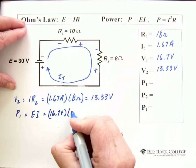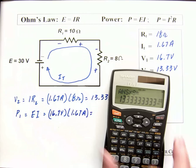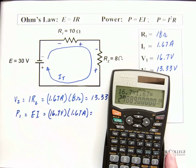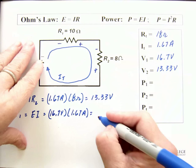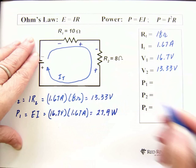So, we do that multiplication. 16.7 times 1.67 equals 27.889. So, I'm going to go with 27.9. 27.9. And the units are watts.